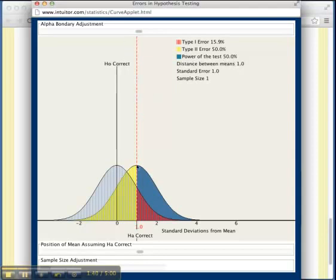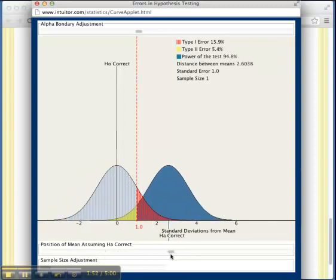We have two controls. First, let me show you the one down here on the bottom: position of mean assuming HA is correct. If you click and drag on this, you can adjust this alternative distribution. You can put it somewhere a little more reasonable. I think it's a little cluttered over there. And now you can see the distinction between these two curves.